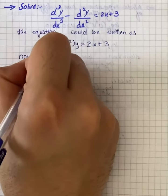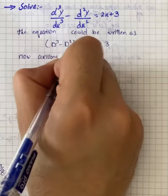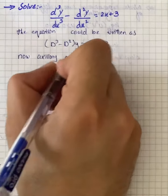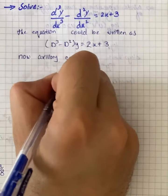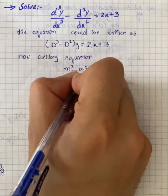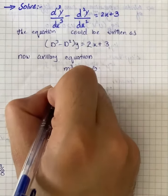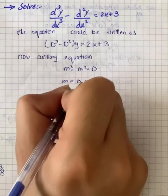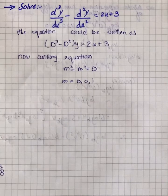Now we will take the auxiliary equation. The auxiliary equation will give us m³ - m² = 0, which gives m equals 0, 0, and 1. So the complementary function will be...